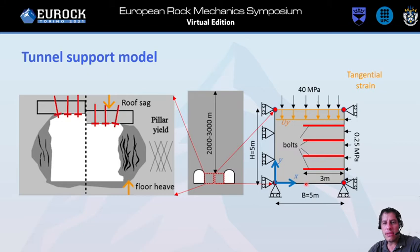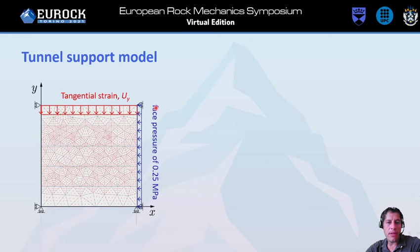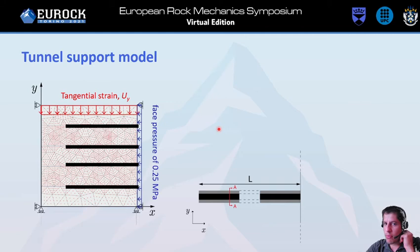We model our gabion as a square, five by five meters, with three-meter bolts and initial vertical stress conditions. We model shotcrete with a surface pressure on the wall face, and we have four bolts. Tangential strain reproduces the roof sag and floor heave effect. This is the initial mesh; we used Plaxis as the software.